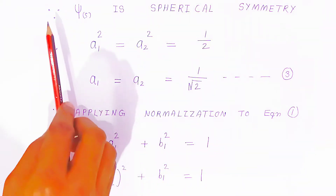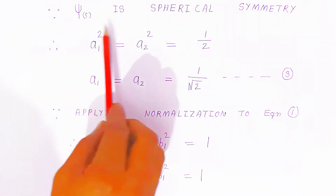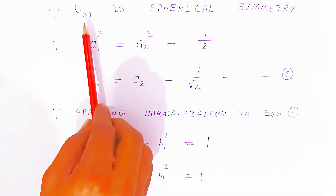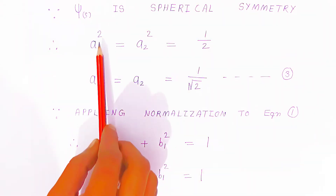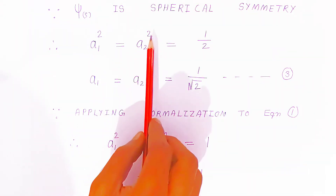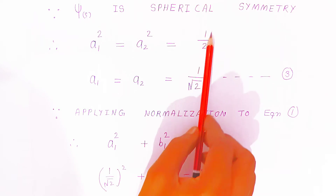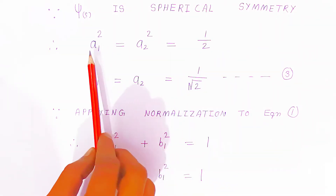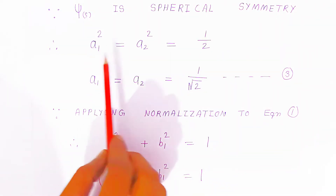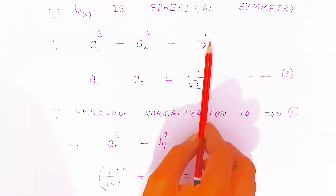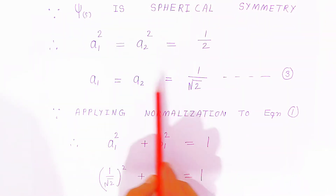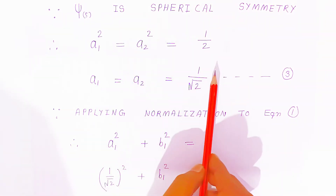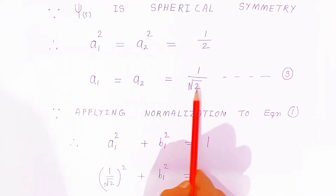Since ψS has spherical symmetry, because of that spherical symmetry A₁² = A₂² = ½. The square of the coefficients A₁ and A₂ always comes out to one-half. Therefore A₁ and A₂ will both be 1/√2.